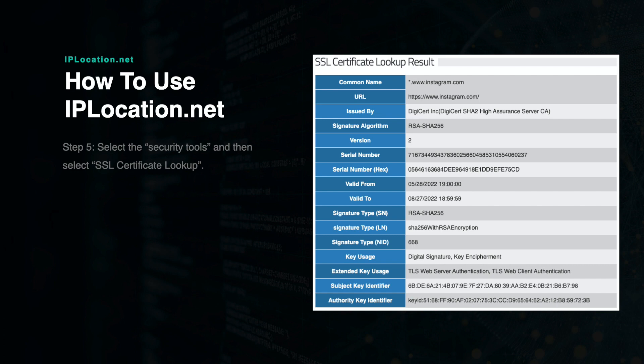To view SSL certificate data, click on the Security Tools option and then select SSL Certificate Lookup. Type in your website and then press Enter. From here, you will be shown a series of rows and columns providing valuable information about the certificate used on the website. In this example, the certificate was issued by DigiCert, Inc., and the algorithm is RSA SHA-256. You are also given the full serial number and other pertinent details.